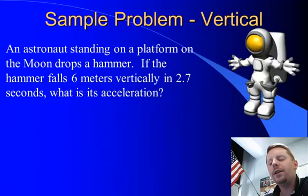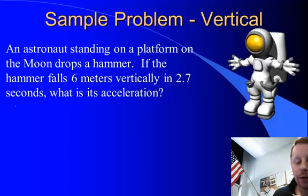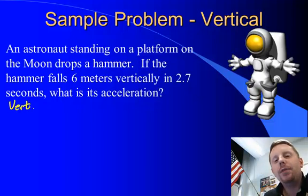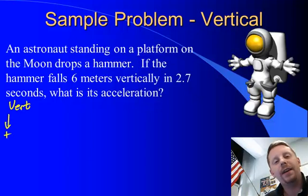These also work for vertical motion problems. An astronaut standing on a platform on the moon drops a hammer. If the hammer falls 6 meters in 2.7 seconds, find its acceleration. This is a vertical problem, and the initial motion of the hammer is going to be down, so we'll call down positive before we make our table.